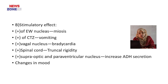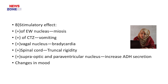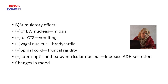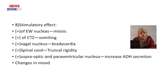Number 5 is stimulation of the supraoptic and paraventricular nucleus. As a result, there is secretion of antidiuretic hormone and oliguria in morphine-addicted patients. Lastly, there are changes in mood — euphoria and dysphoria. These are the stimulatory effects of morphine on the CNS.